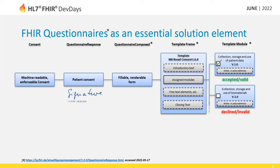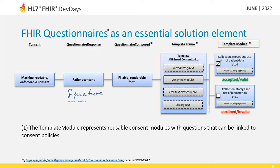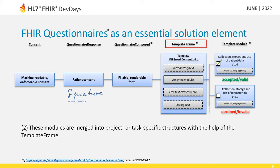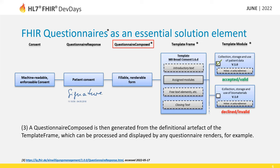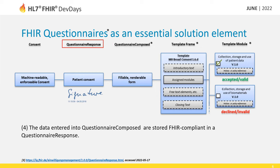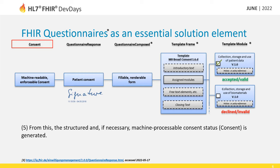FHIR questionnaires play an essential role in FHIR-based modular consent management. The profile template module represents consent modules which are reusable, containing questions and links to consent policies. These modules are merged into project or task-specific structures with the help of the template frame. A questionnaire composed is then generated from the definitional artifact of the template frame, which can be processed and displayed by any questionnaire renderer. The data entered into questionnaire composed are stored FHIR-compliant in a questionnaire response, from which the structured and machine-processable FHIR consent resource is generated.